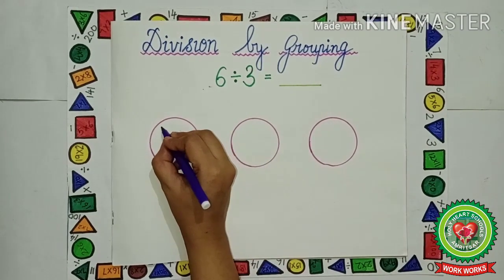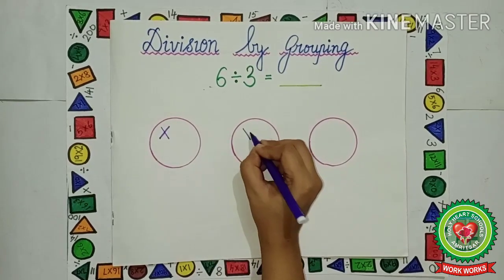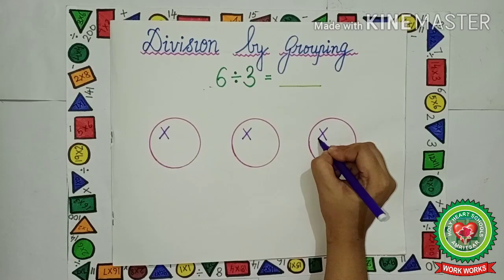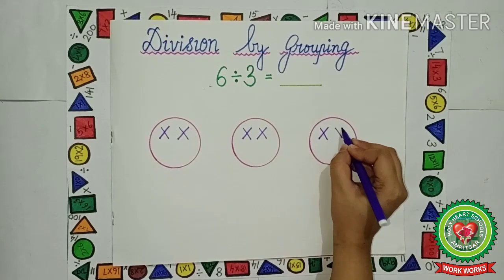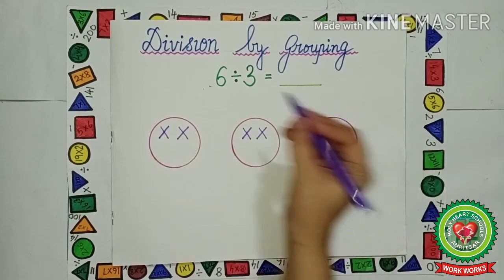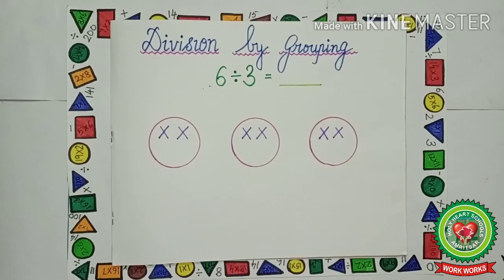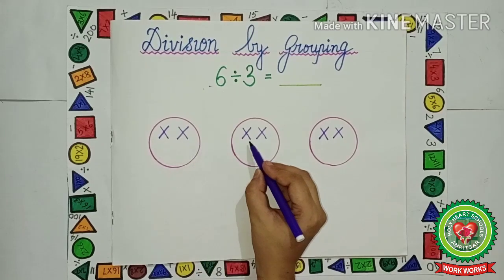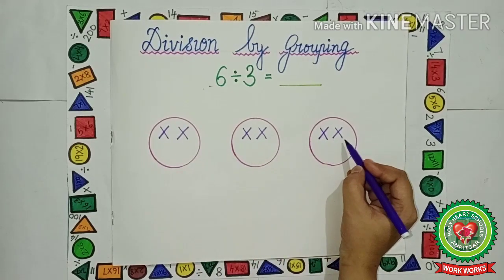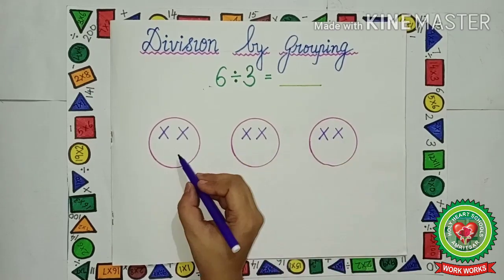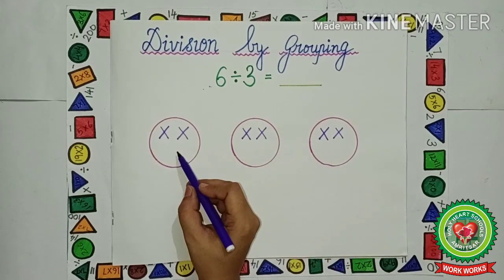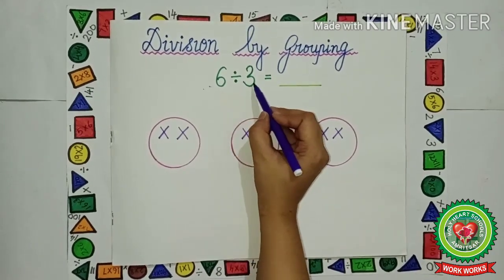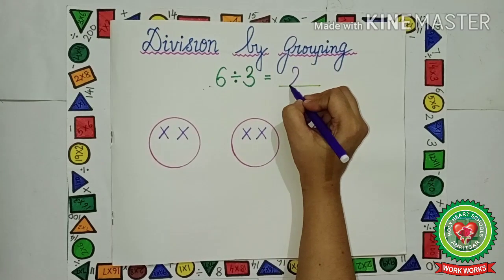So let us count 6: 1, 2, 3, 4, 5, 6. So we have got 6. Now let us count how many are there in each group: 1, 2 — 1, 2 — 1, 2. That means each group has 2 numbers. So we have made 3 groups of 2. That means 6 divided by 3 is equal to 2.